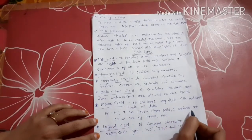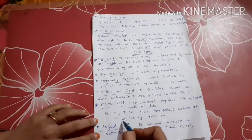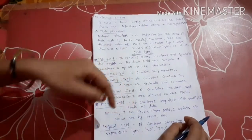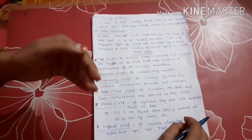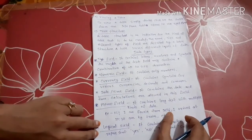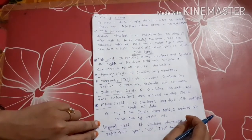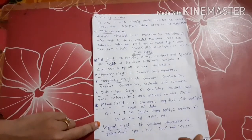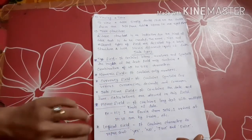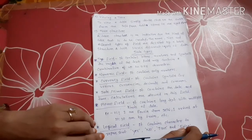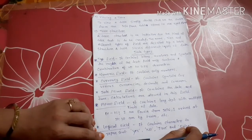For example, a memo field can contain long text like: 'I am Fauzia from Delhi, I arrived at 3:00 AM by train EDC' — combining numbers, symbols, text, and commas. The Logical field contains characters to represent Yes/No or True/False values.